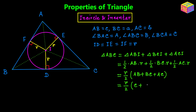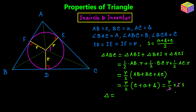AB is lowercase c, BC is lowercase a, and AC is lowercase b, so this becomes r over 2 times (a + b + c). Now a + b + c is the full perimeter of the triangle, which equals 2 times the semi-perimeter S, where S = (a + b + c)/2. So the area of triangle ABC, denoted by delta, equals delta = r·S. From here we can say r equals delta over S — this is an important relationship between the area, the semi-perimeter, and the inradius of the triangle.